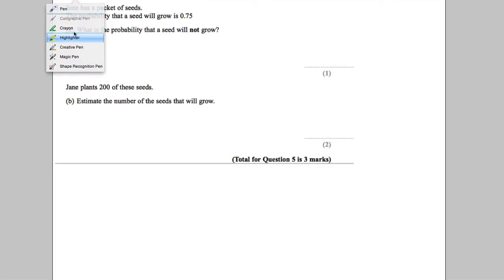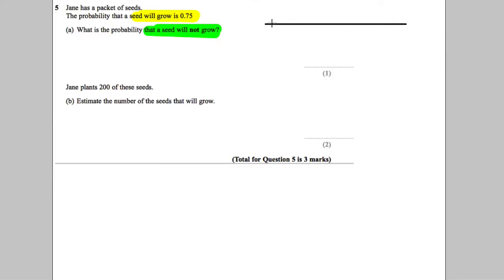Okay, question 5. Jack has a packet of seeds. The probability the seeds will grow is 0.75. What's the probability that a seed will not grow? You should know that all probabilities of an event add up to 1. All the possible outcomes add up to 1. So if you know that, imagine this.